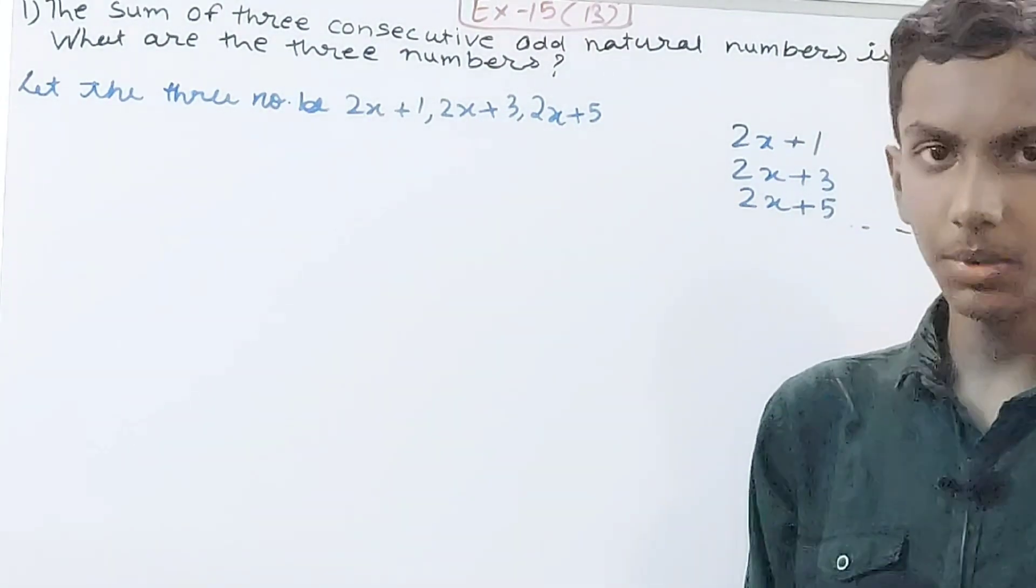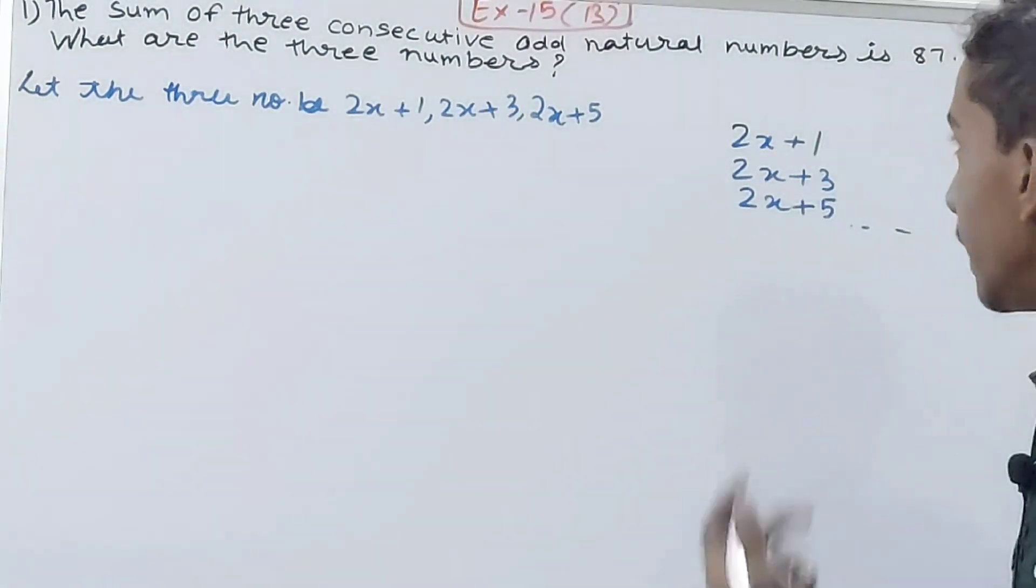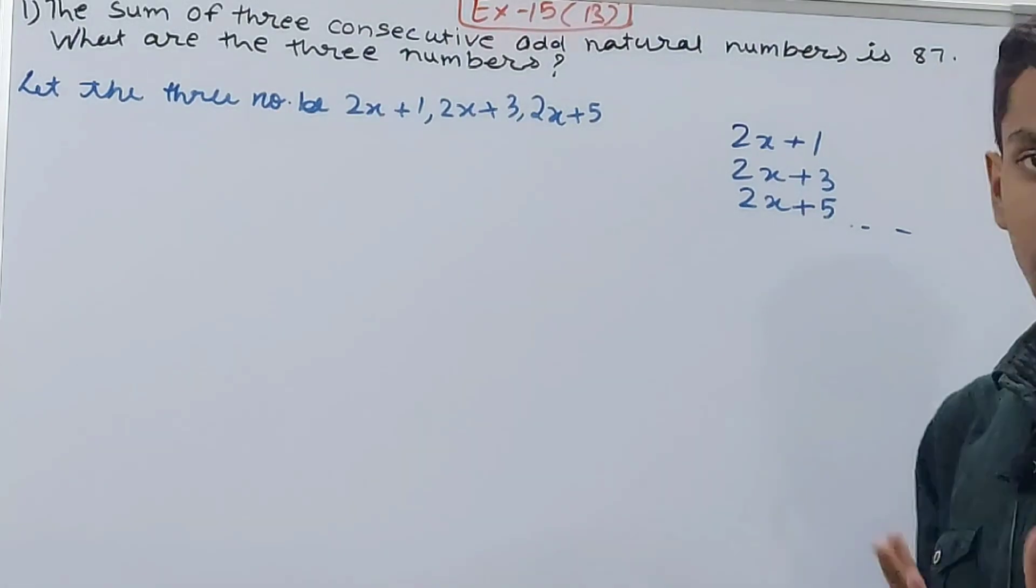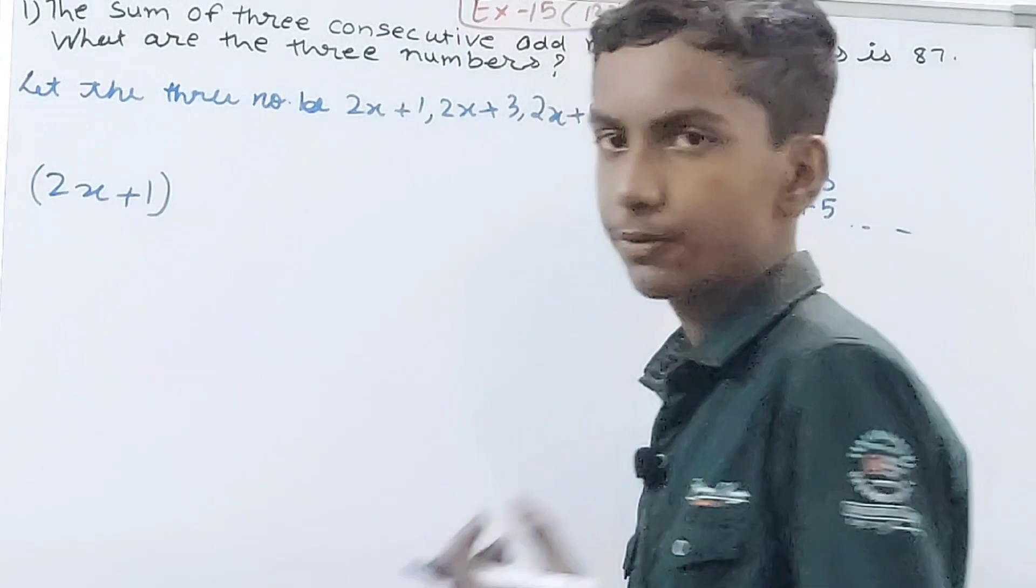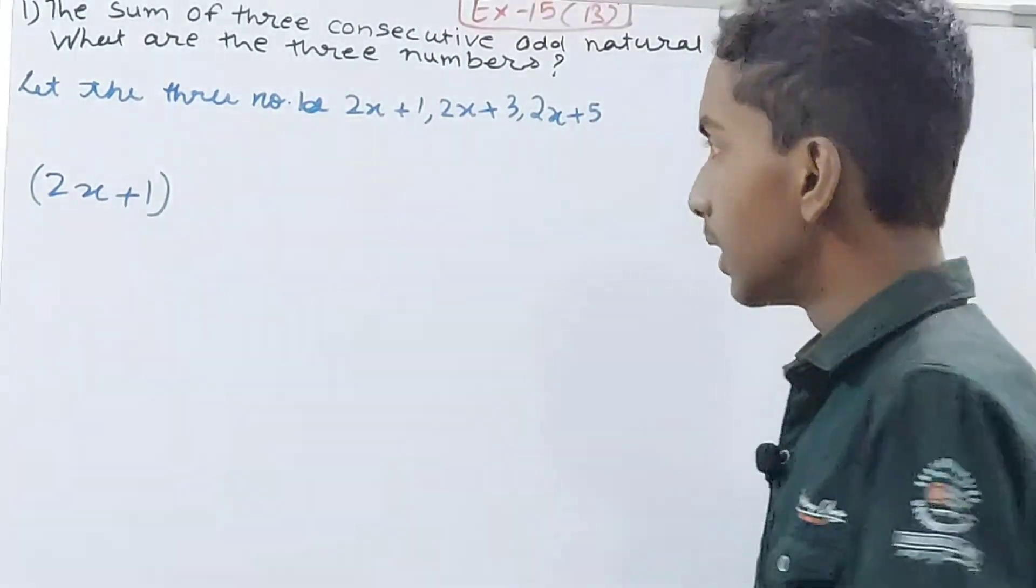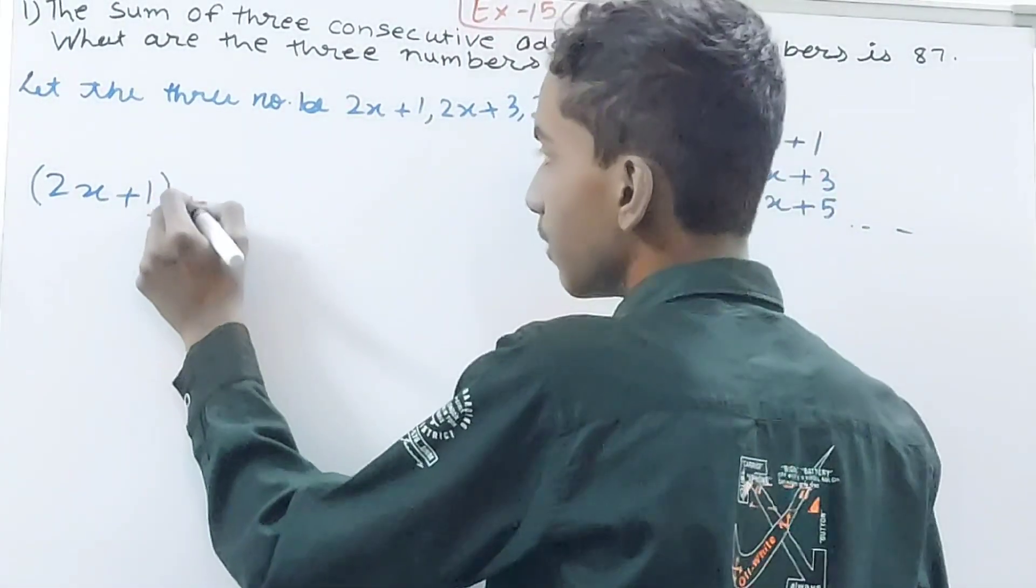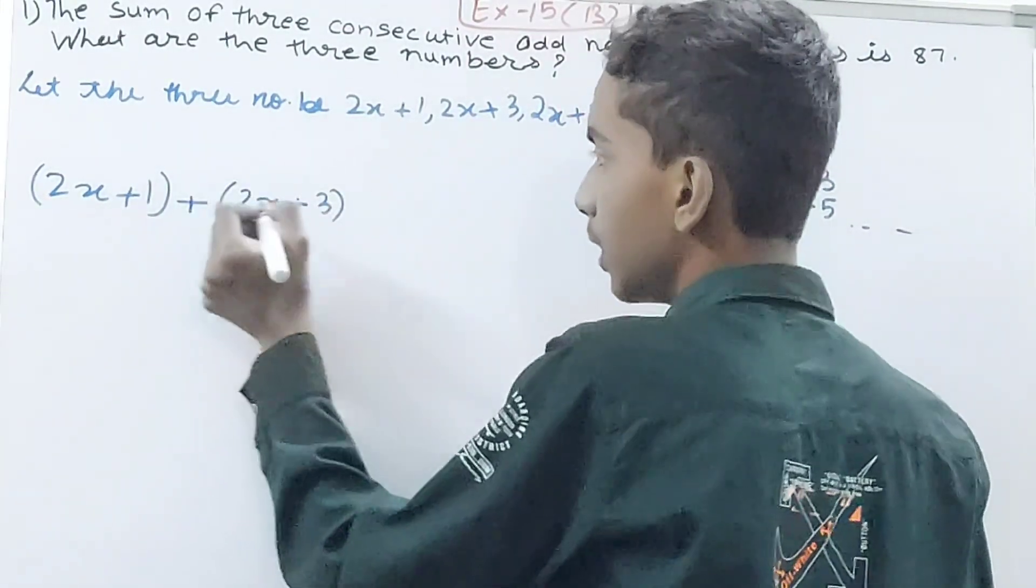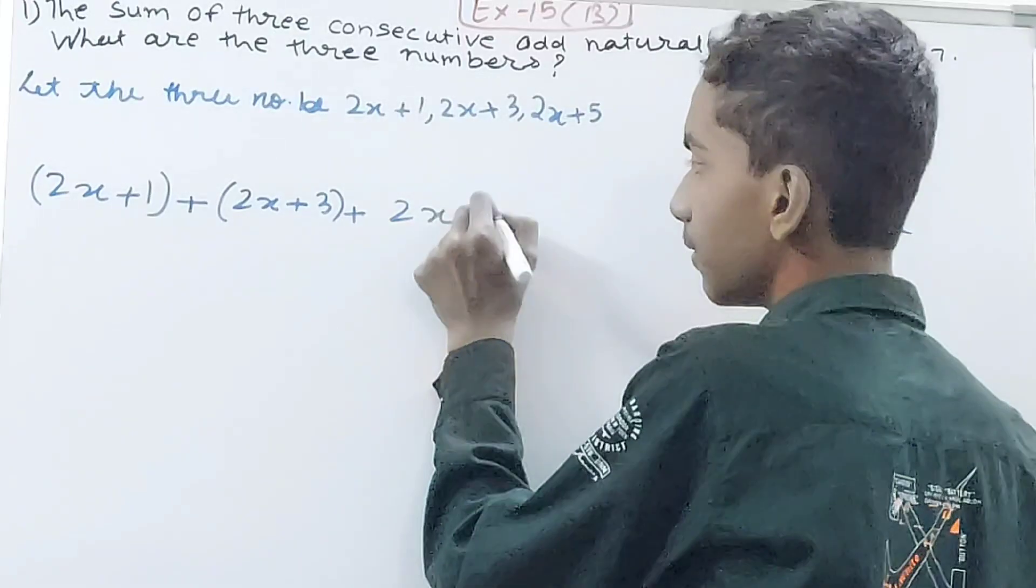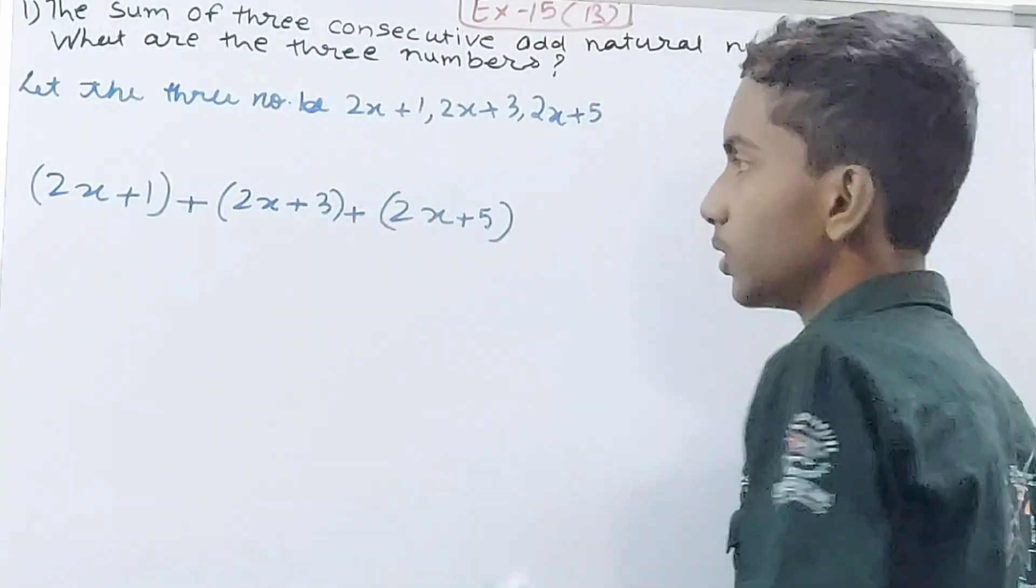Because it is given here in the question, that means if I add 2x+1, my first odd number, then the next one will be 2x+3, the second number, and then 2x+5, the third number. So first number, second number, and third number, all we are going to add. Their sum will be 87.